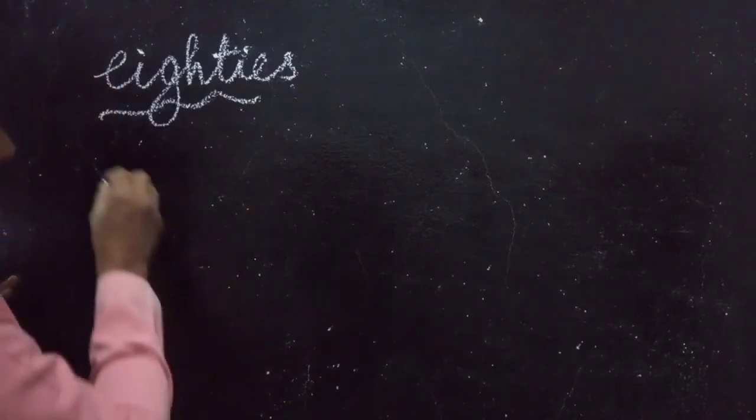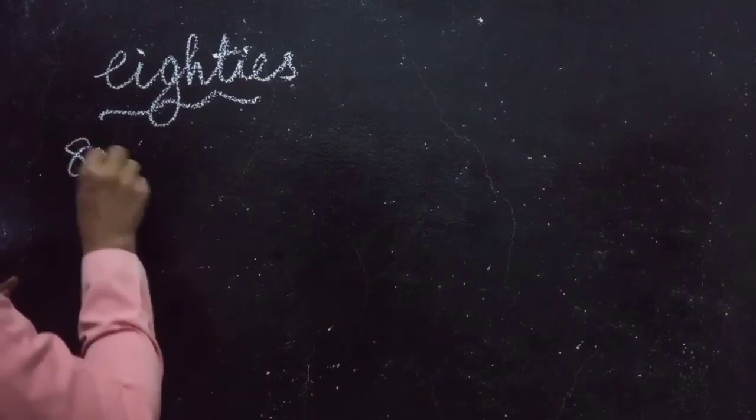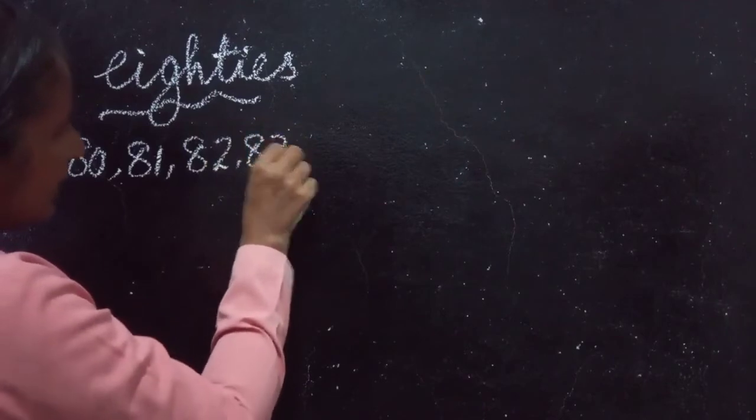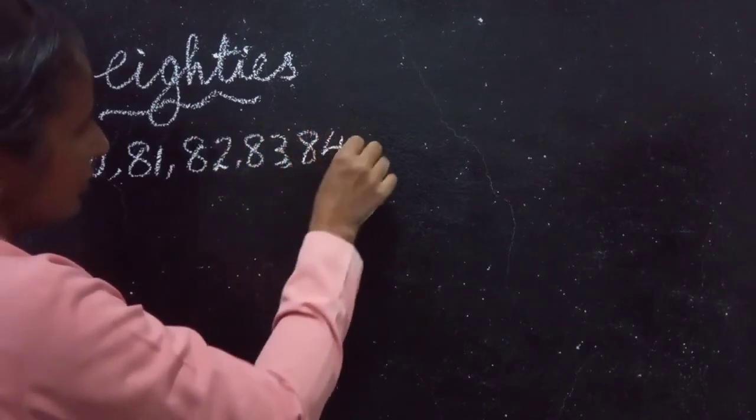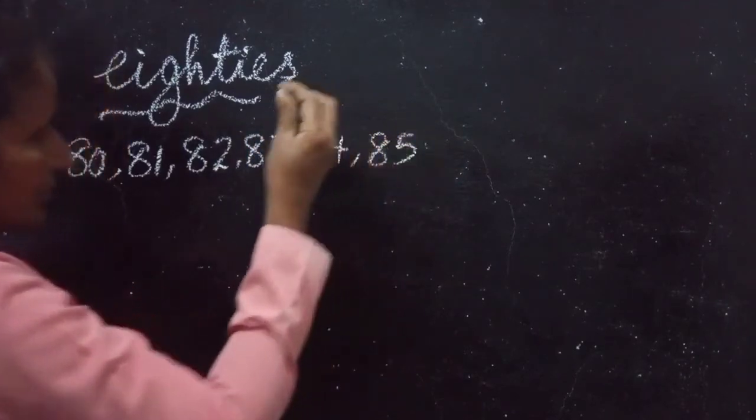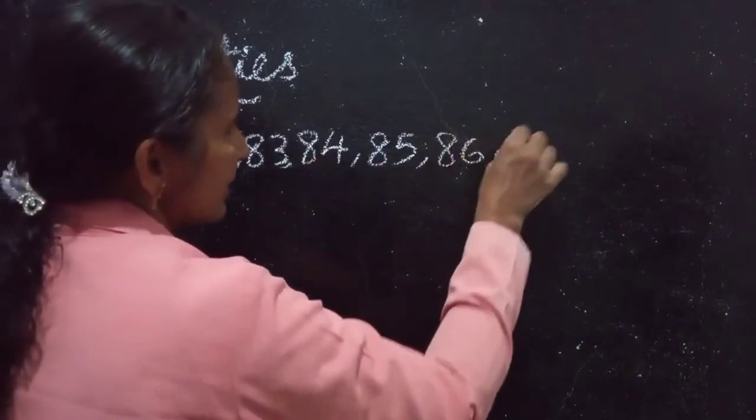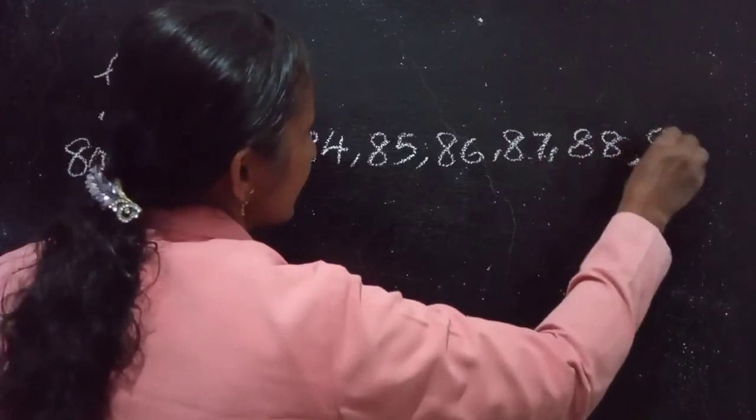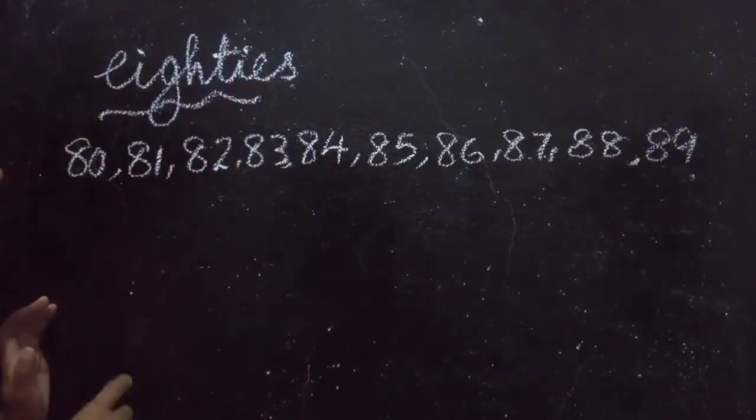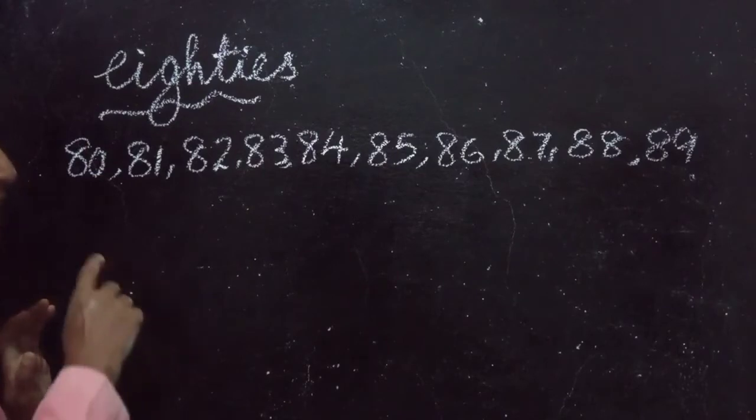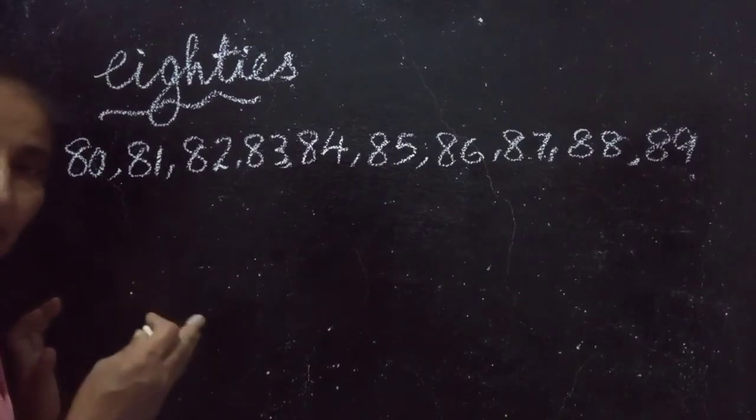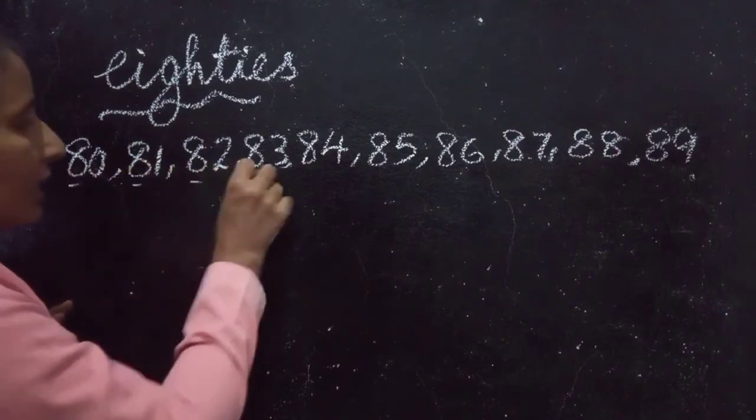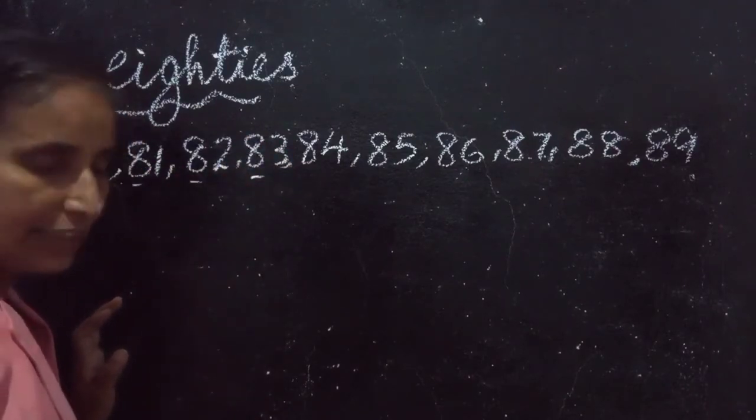80s. Which are the 80s? 80, 81, 82, 83, 84, 85, 86, 87, 88 and 89. These are the 80s. All these numbers are having 8 tens. Starting numbers are 8. So it has 8 tens.